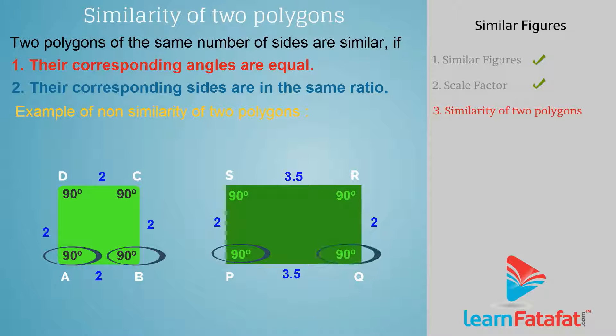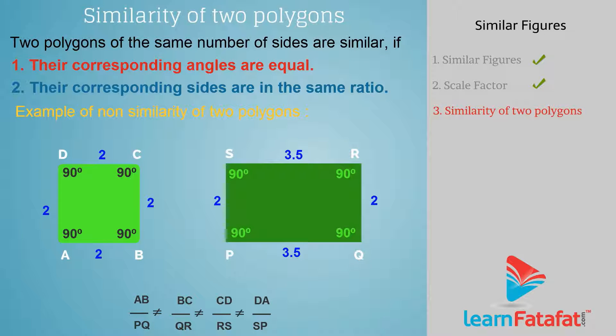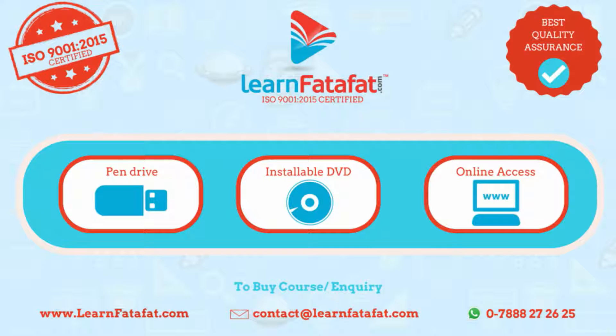Example of non-similarity of two polygons. A square ABCD and a rectangle PQRS are not similar. Since angle A equals angle P, angle B equals angle Q, angle C equals angle R, and angle D equals angle S, but the ratio of sides AB divided by PQ, BC divided by QR, CD divided by RS, DA divided by SP is not equal.